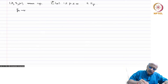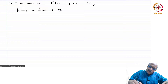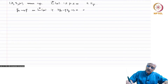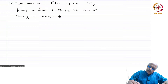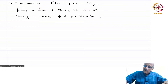We say f_n converges to f in LP(mu) if norm(f_n - f)_p goes to 0 as n tends to infinity. We say the sequence is Cauchy if for every epsilon > 0 there exists a capital N such that for all n, m ≥ N we have norm(f_n - f_m)_p < epsilon.